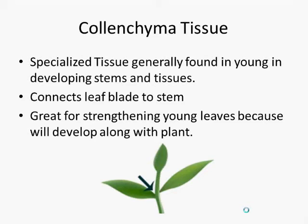Specifically, collenchyma cells are great for supporting leaves because they will continue to grow and allow other tissues to grow as well.